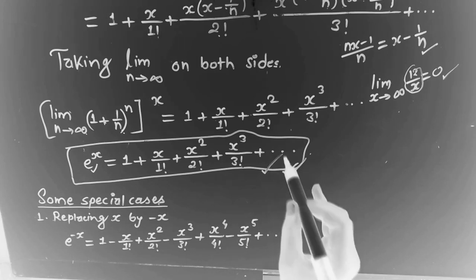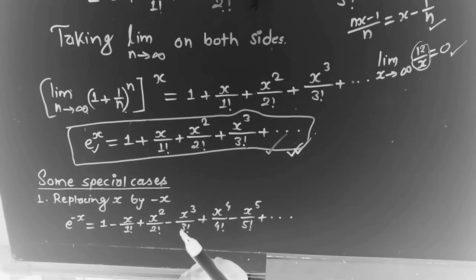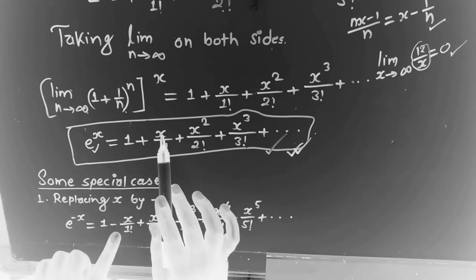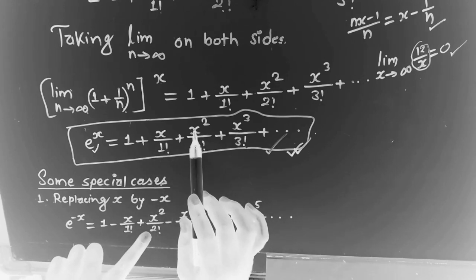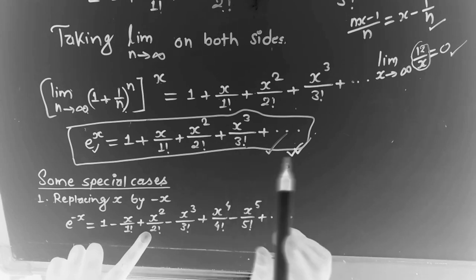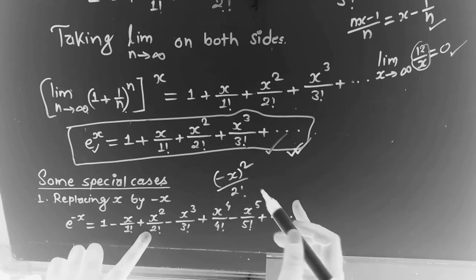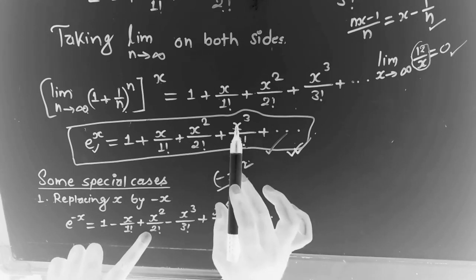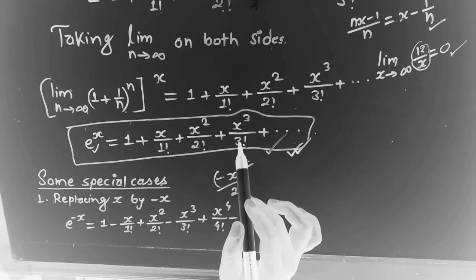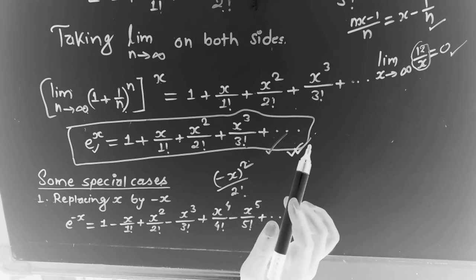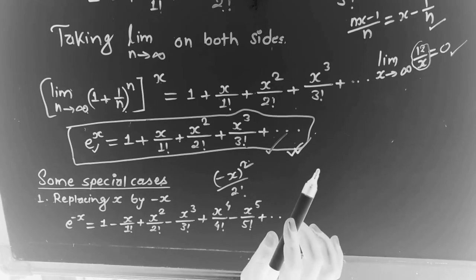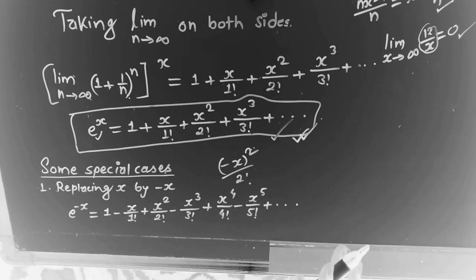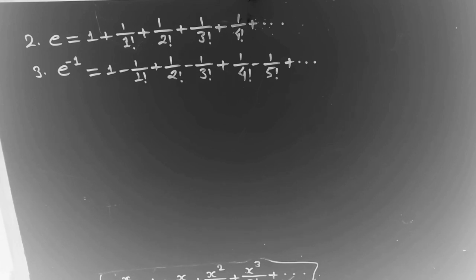So e to the power x has an expansion. To find e to the power minus x, we replace x with minus x in the expansion. This gives e to the power minus x equals 1 minus x upon 1 factorial plus x squared divided by 2 factorial minus x cubed divided by 3 factorial plus x to the power 4 divided by 4 factorial minus x to the power 5 divided by 5 factorial, and so on.